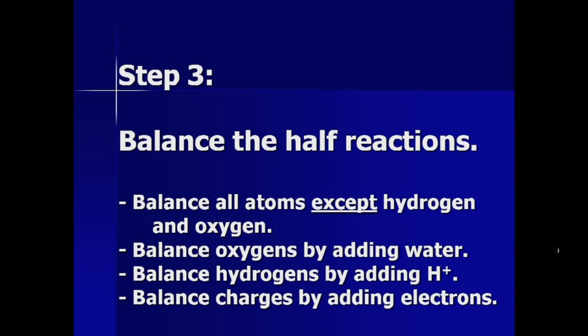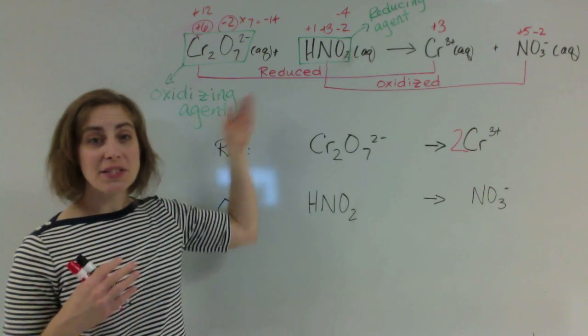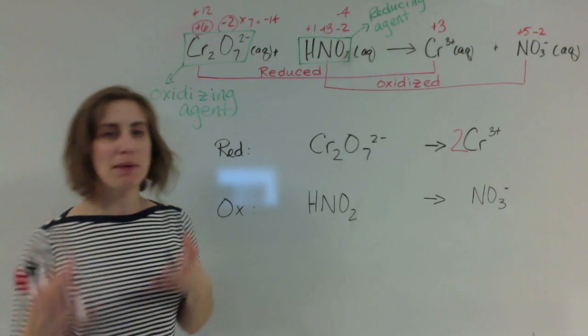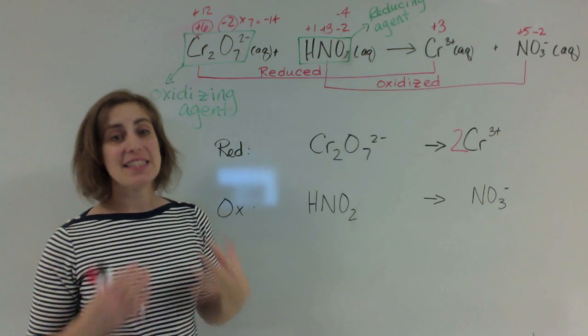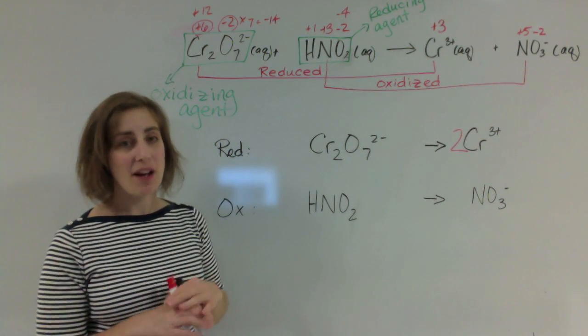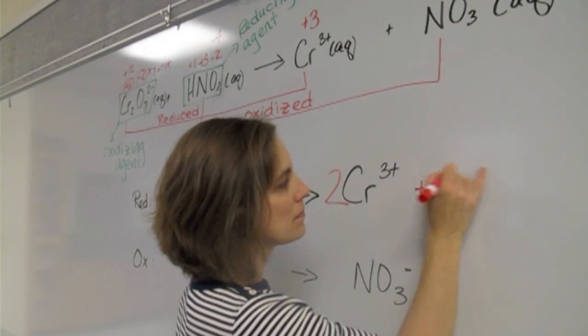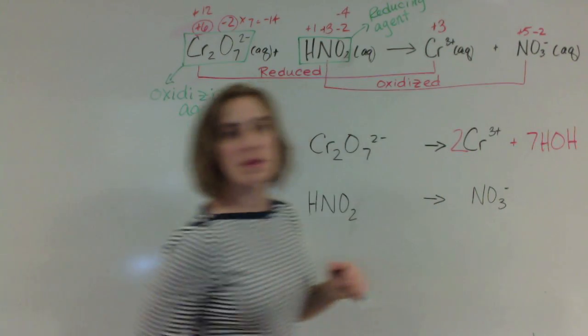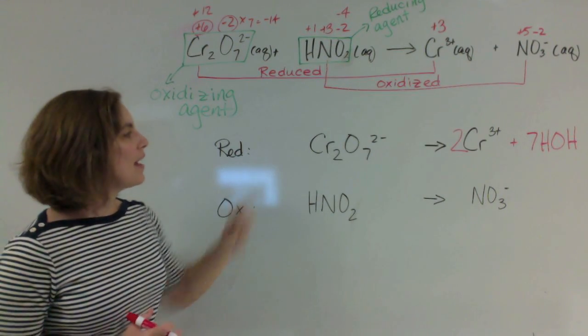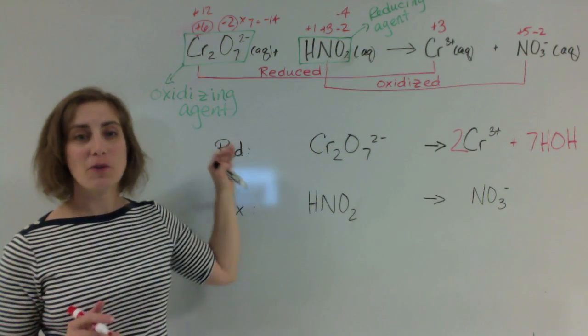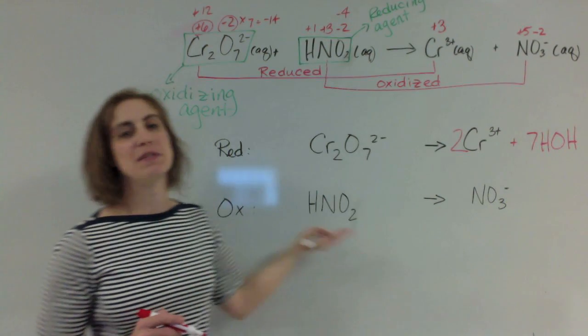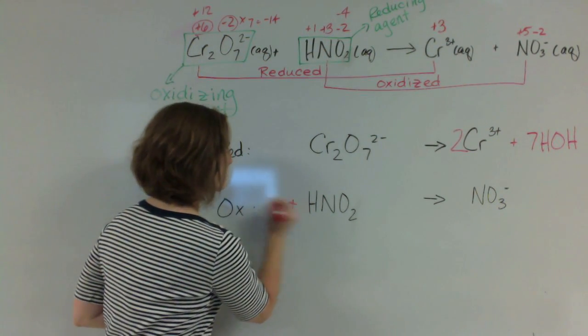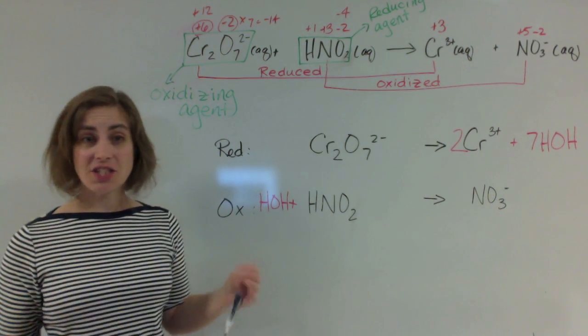Step 2 is going to be to balance the oxygens. Now the way we're going to balance the oxygens is by adding water molecules. Remember, these are aqueous solutions, which means there's plenty of water molecules that can participate if we need them to. And we do. So we have 7 oxygens on this side, which means on that side I'm going to add 7 water molecules. So each one will contribute an oxygen molecule. I now have 7 water molecules on that side, and 7 oxygens on this side. So our oxygens are now balanced for the reduction half reaction. If I do the same over here, I see I have 2 oxygens over here, 3 oxygens over there, which means I need 1 water molecule on the left side of the reaction. Now our oxygens are all balanced.